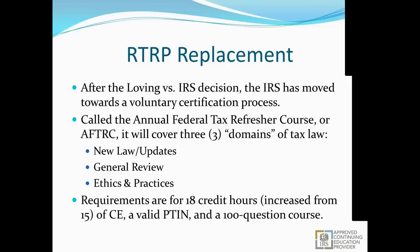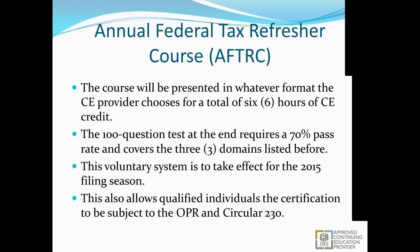The requirements for this course are 18 credit hours of CE per year — increased from the original 15 — a valid PTIN number, and completion of a 100-question course. The Annual Federal Tax Refresher Course will be presented in whatever format the CE provider chooses, as long as total CE credit equals six hours. Providers will offer it as a seminar, self-study, or webinars broken into blocks. The 100-question test requires a 70% pass rate and covers the three domains: new law, general law, and ethics.